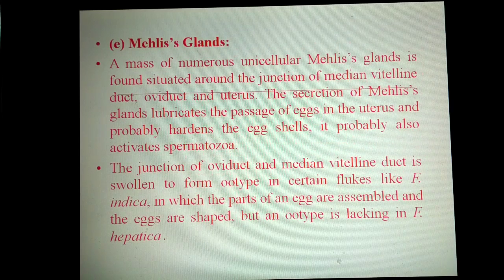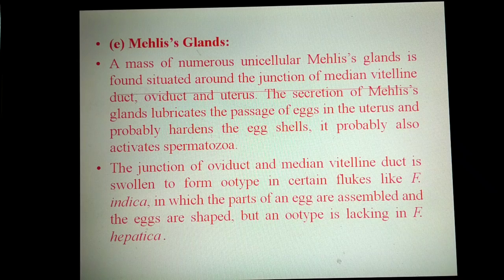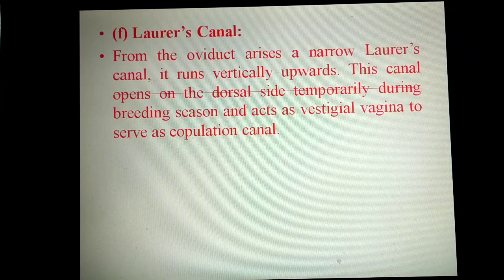The Mehlis glands lubricate the passage of eggs in the uterus and harden the egg cells. Their functions include secreting lubricants and helping in the activation of spermatozoa. The Laurer's canal acts as a vestigial vagina during copulation.